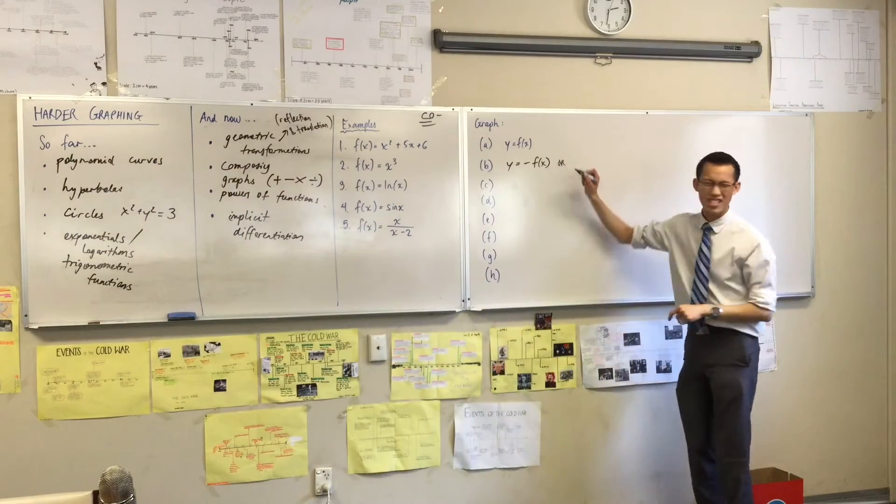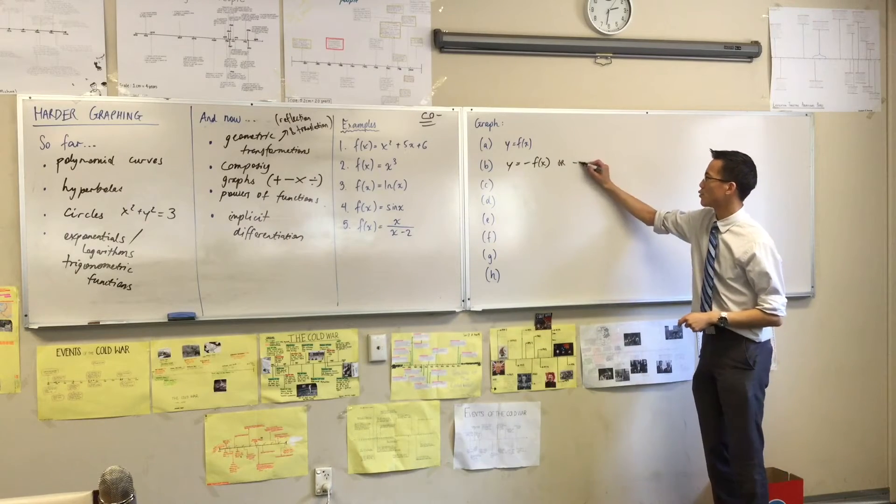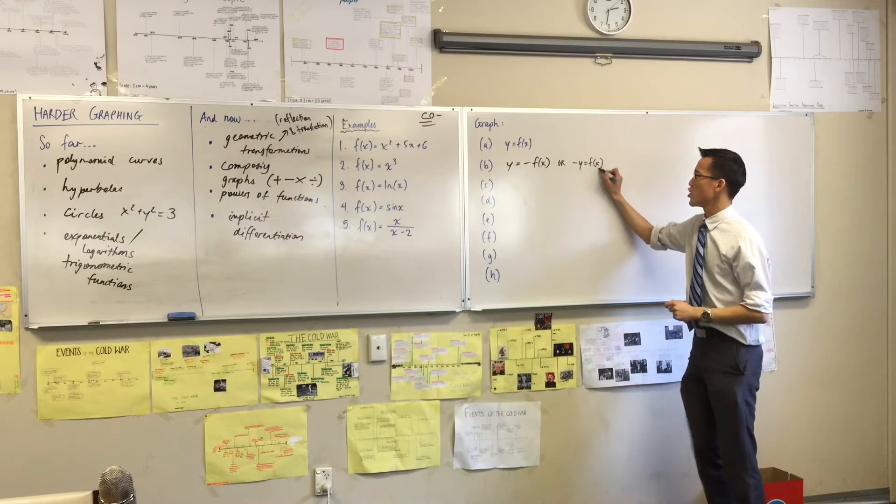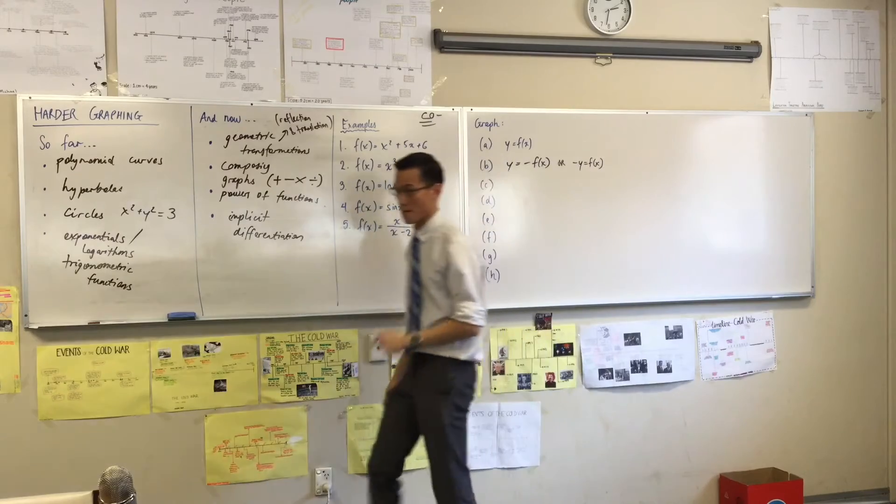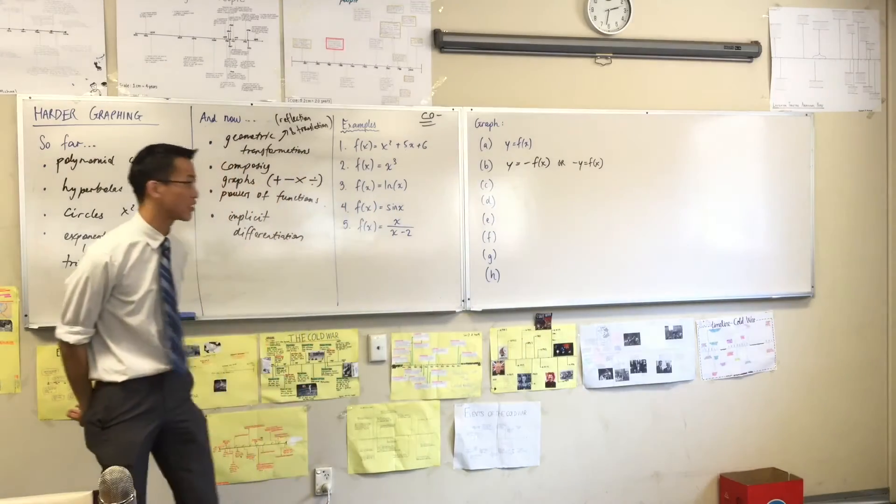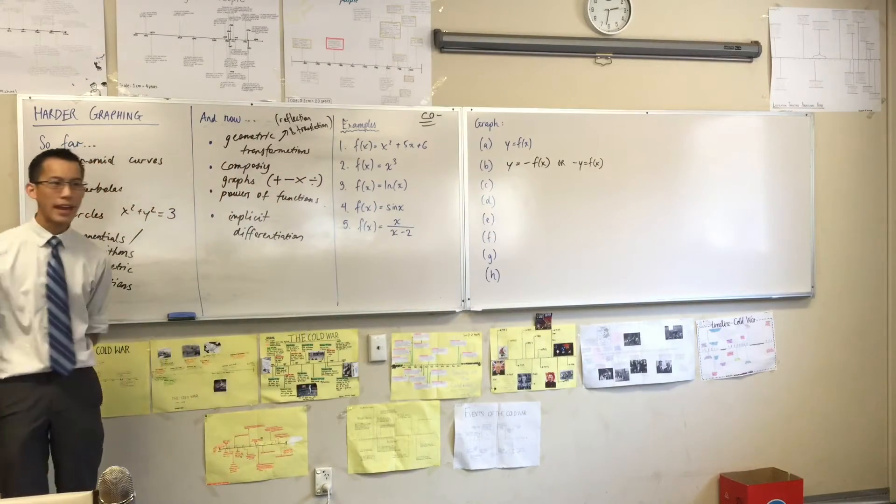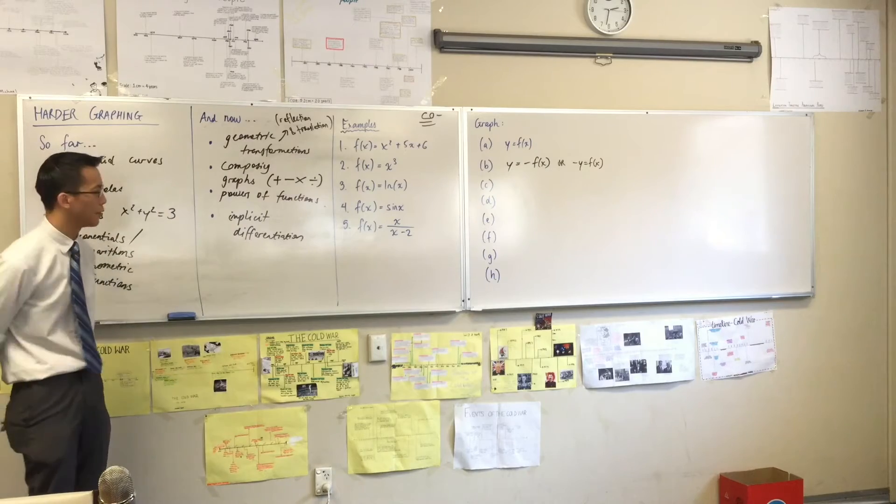Now, for reasons that are going to become clear in a second, I actually prefer writing this in a slightly different way. I'm going to write it like this. You might say that's weird. Well, hopefully by the end of this lesson, I will justify why I think that's actually a better way to write it. That's a vertical flip.